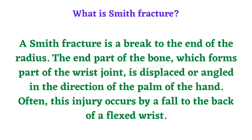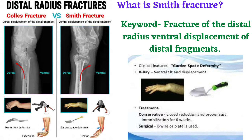Smith fracture is the opposite of Colles' fracture. In Colles' fracture, severe dorsiflexion occurs; in Smith fracture, severe volar flexion occurs, causing a fracture in the distal radial bone near the wrist. Colles' fracture shows dorsal displacement of the distal fragment, while Smith fracture shows volar displacement. The deformity in Colles' fracture is dinner fork deformity, and in Smith fracture it is garden spade deformity.